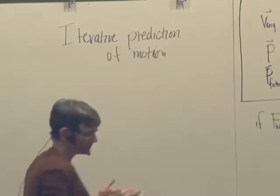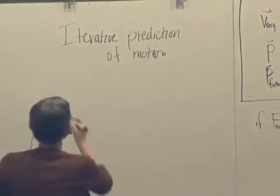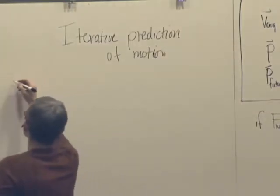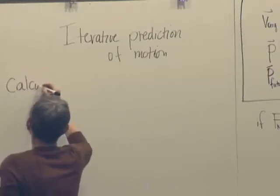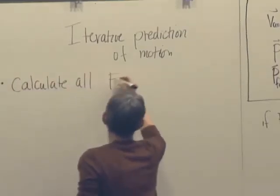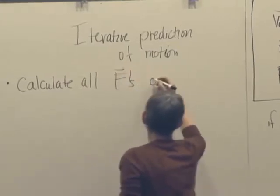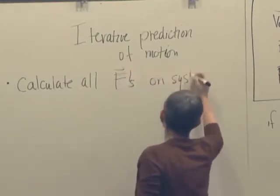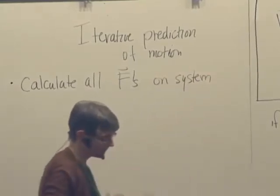And here's the outline of what we're going to do. So first we calculate all the forces acting on a system. And we add them up to get F net.